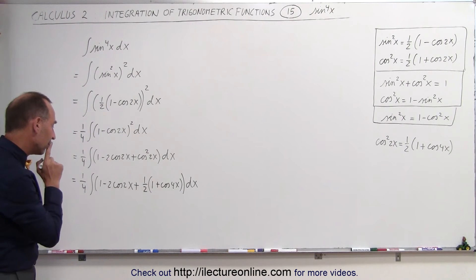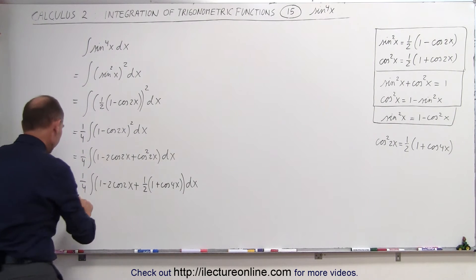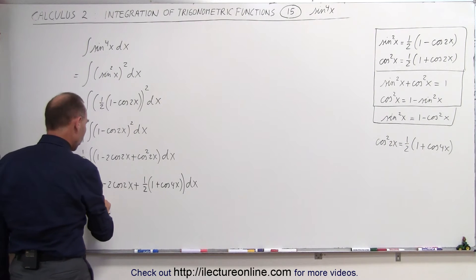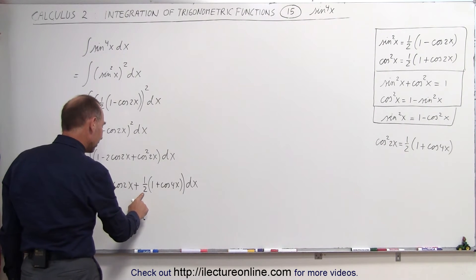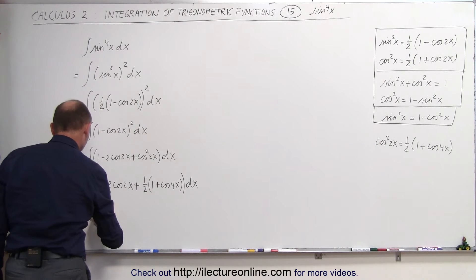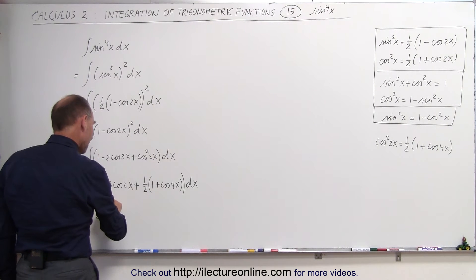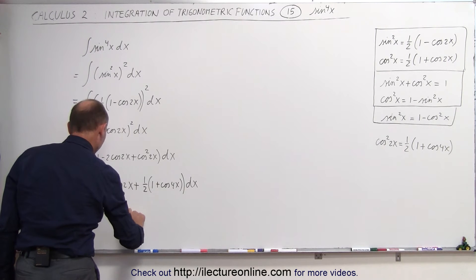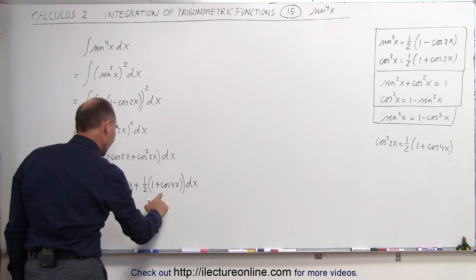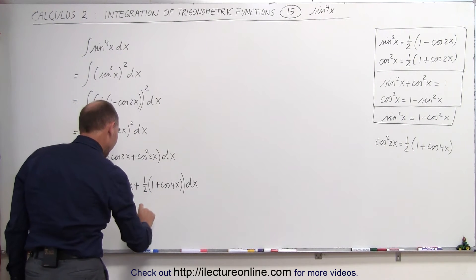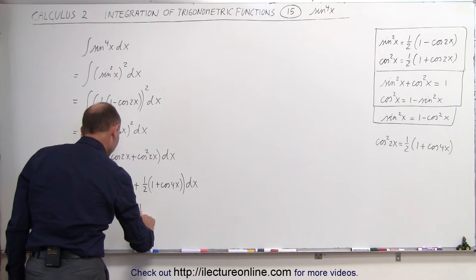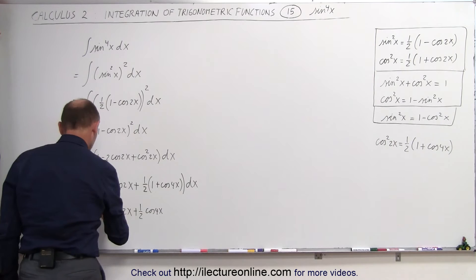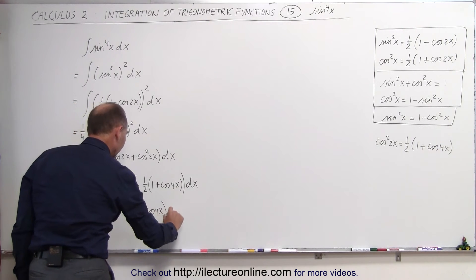Now we need to simplify this a little bit more. This is equal to one quarter times the integral of — here we have 1 plus one half, which makes it three halves — minus 2 times the cosine of 2x, plus one half times the cosine of 4x, in parentheses, times dx.